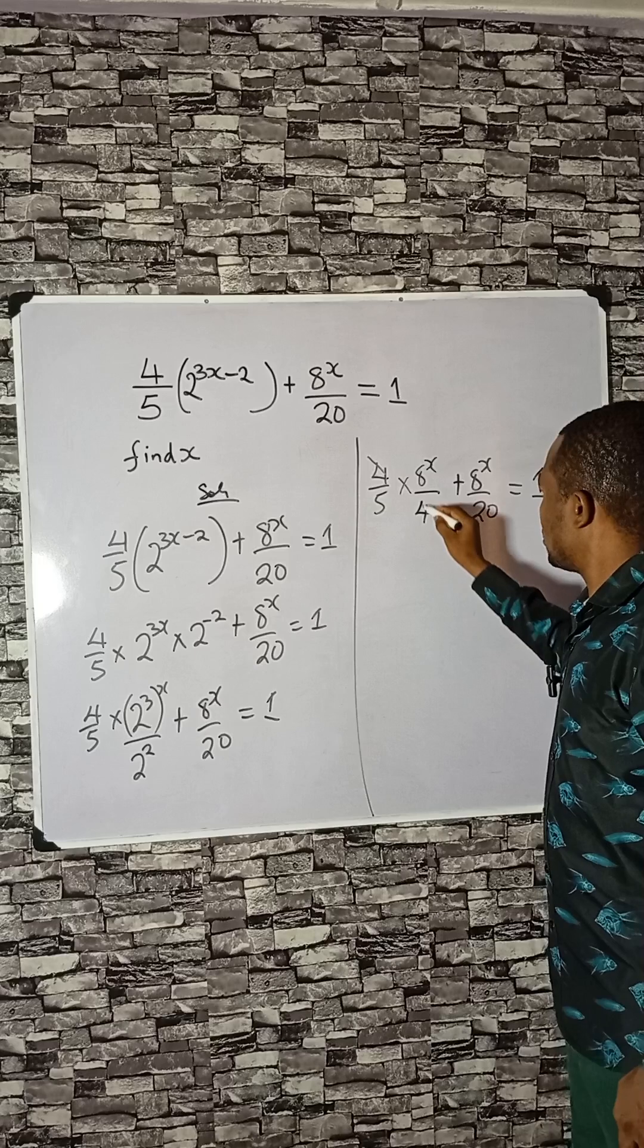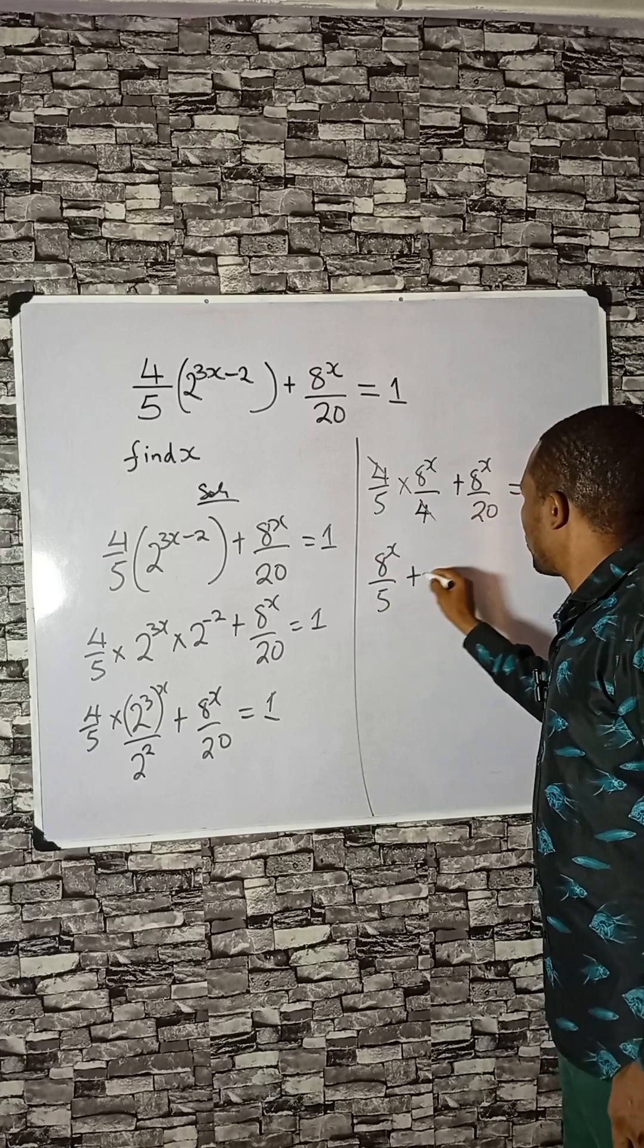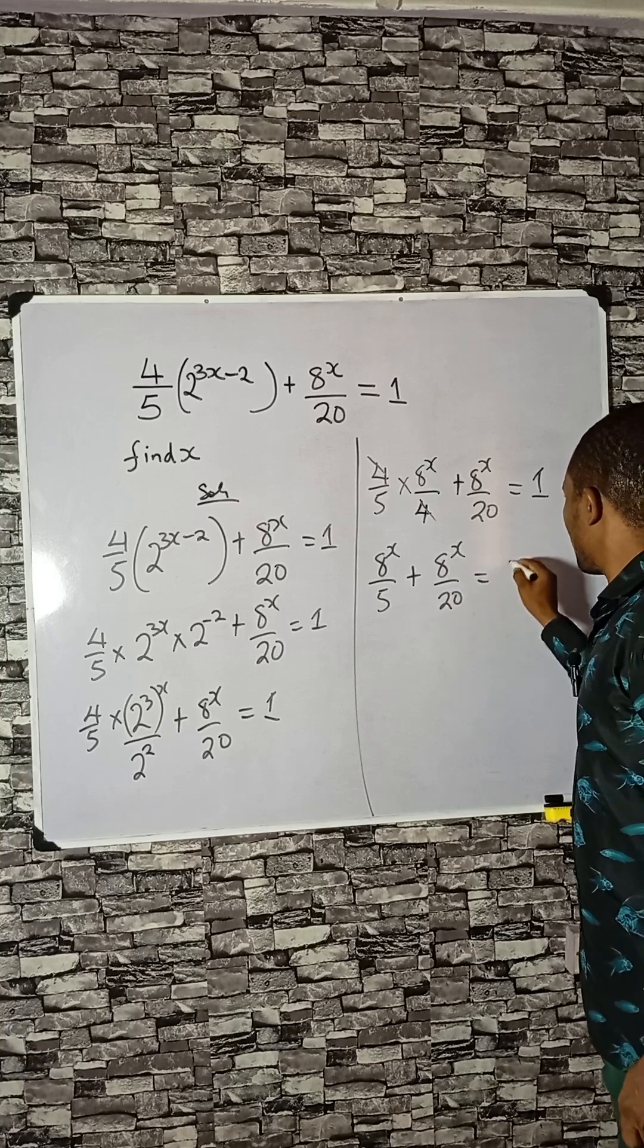So we have 8 raised to the power x divided by 5, plus this divided by 20 equals to 1.